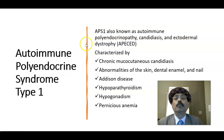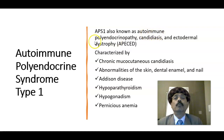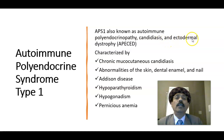What is autoimmune polyendocrine syndrome type 1? It is also called autoimmune polyendocrinopathy, candidiasis and ectodermal dystrophy, or APECED.